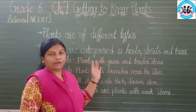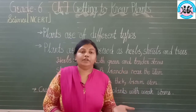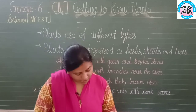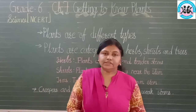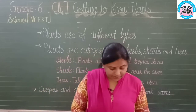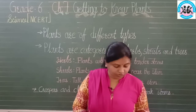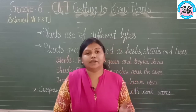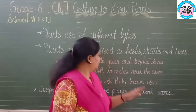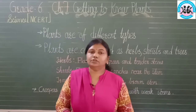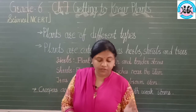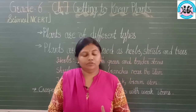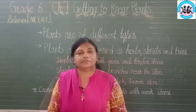Herbs — examples are rose plant and tulsi; they are herb plants. Shrubs — examples are lemon, jasmine and so on. Trees are very easy to identify: they are huge in size, with very thick and brown stem. We will study each in detail.